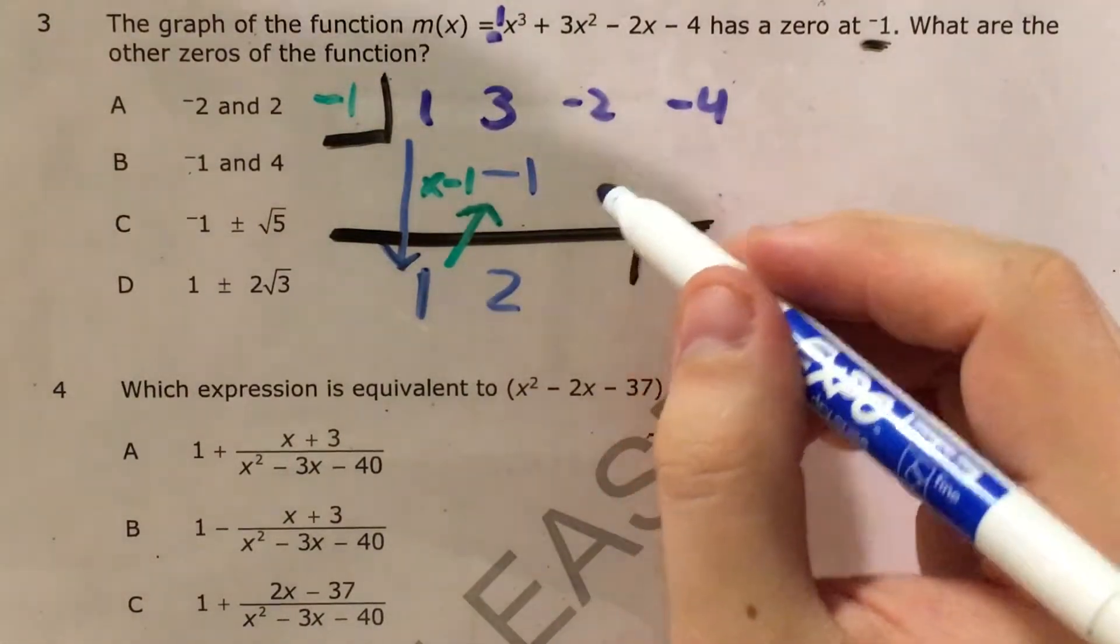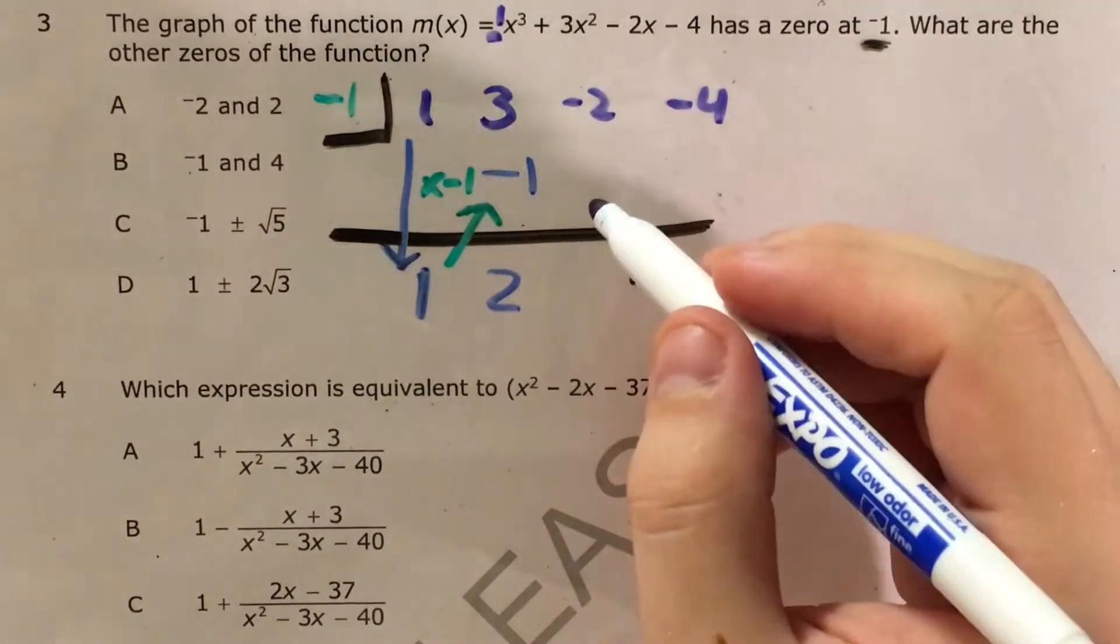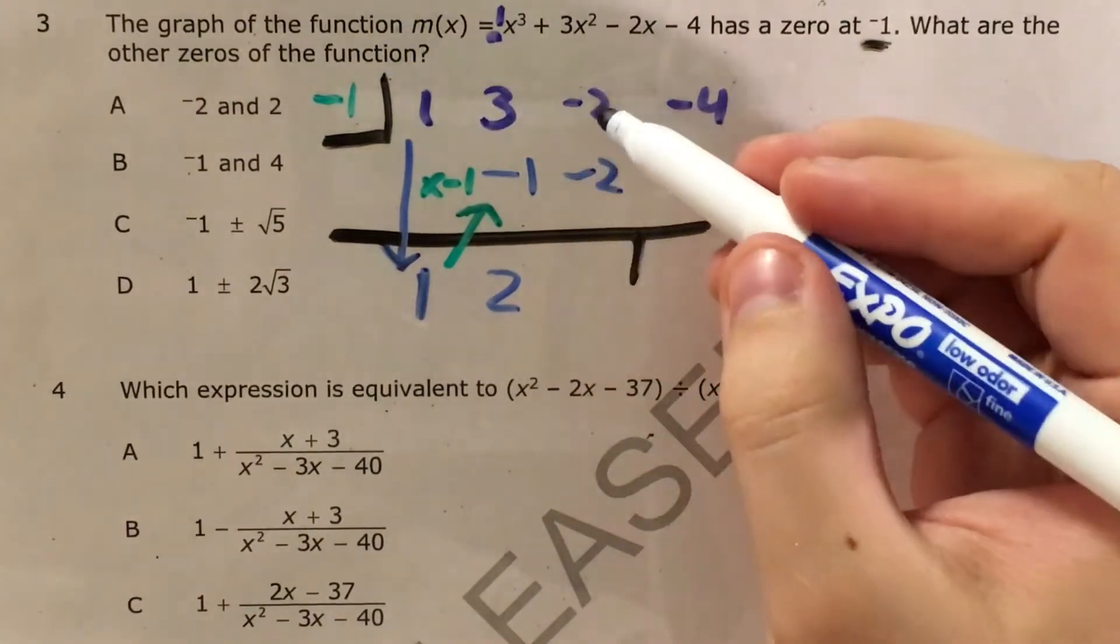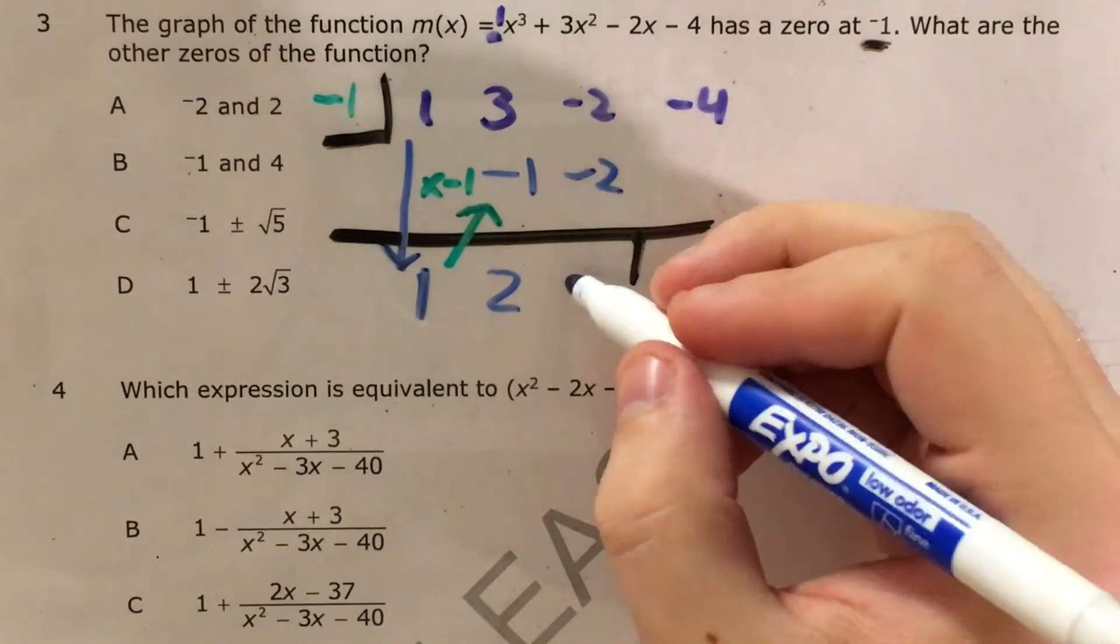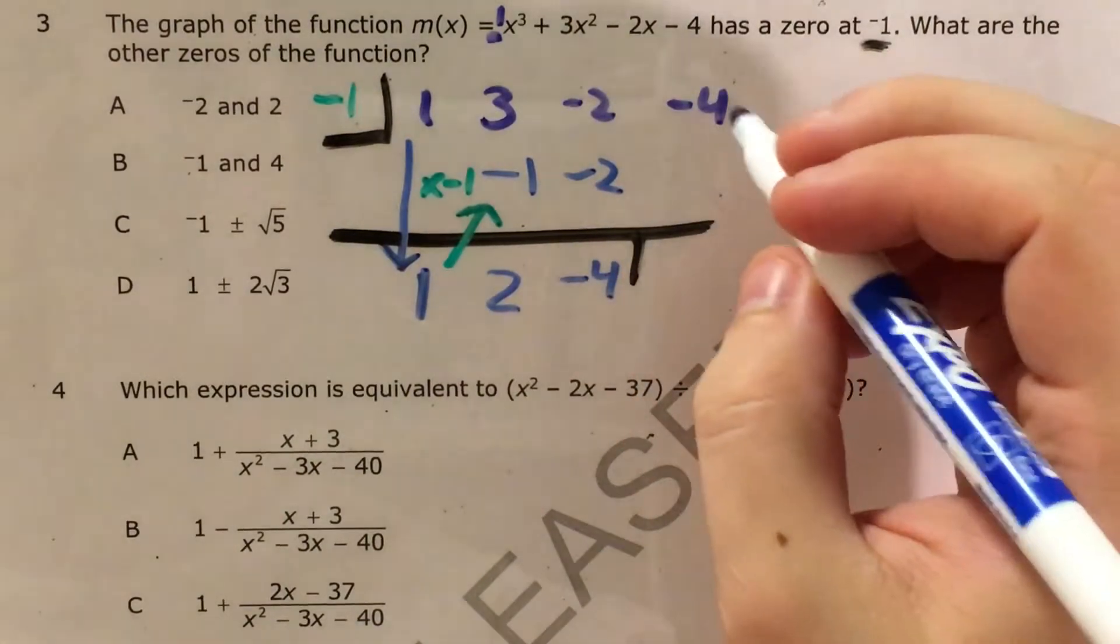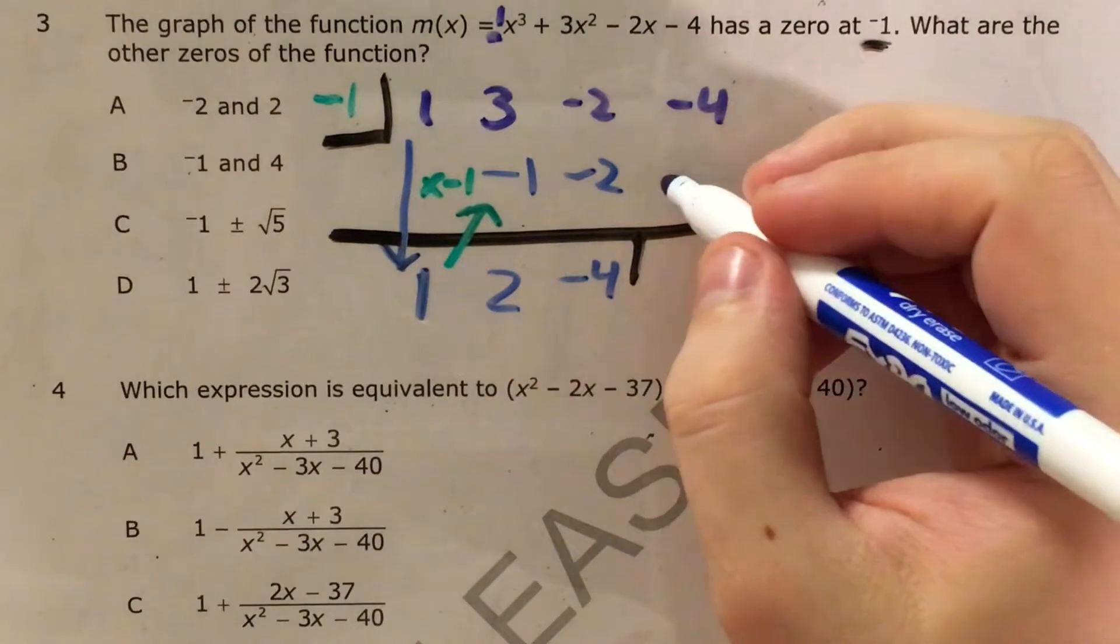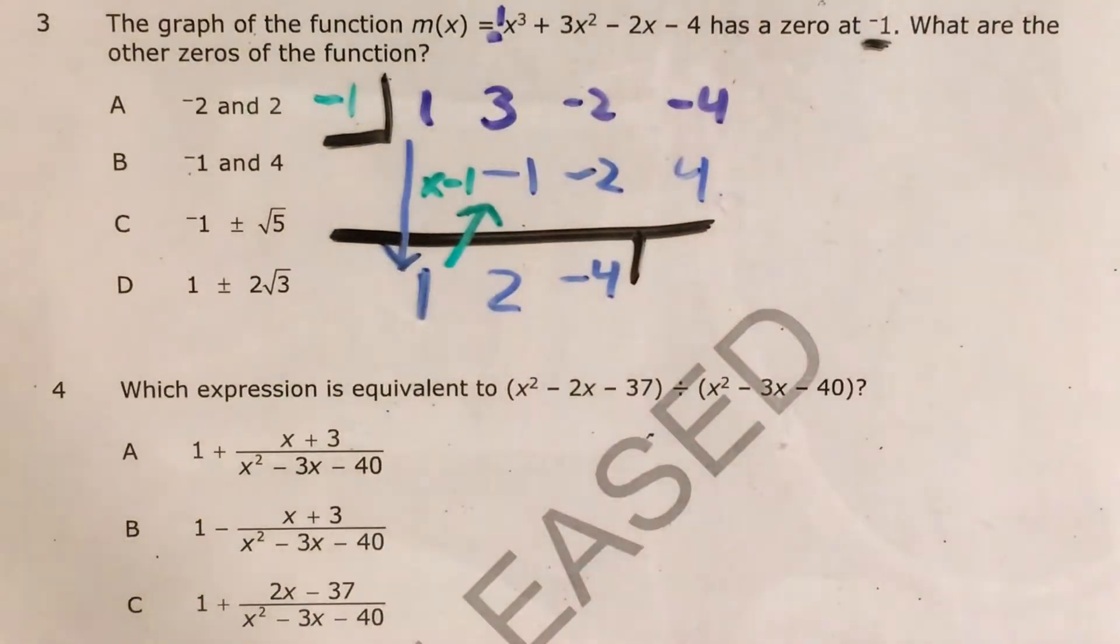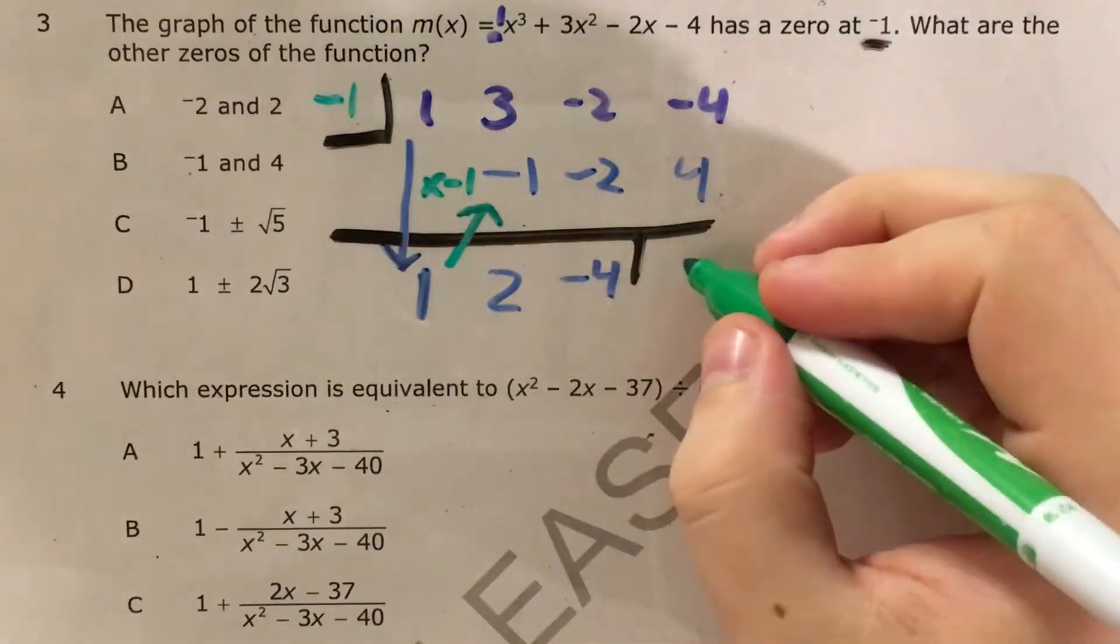I go diagonal and I multiply by negative one. Two times negative one is negative two. Negative two plus negative two is negative four. I come up here and when I multiply negative four by negative one, I get positive four. And now negative four plus four equals zero.